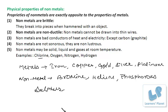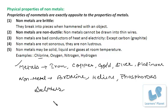Now let's see the properties of non-metals. Metals are solids and hard, except mercury which is a liquid, and sodium and potassium which are soft. In the case of non-metals, they may be solid, liquid, or gas at room temperature. Iodine and sulphur exist as solids, bromine exists as a liquid, and oxygen, nitrogen, and hydrogen are all gases.